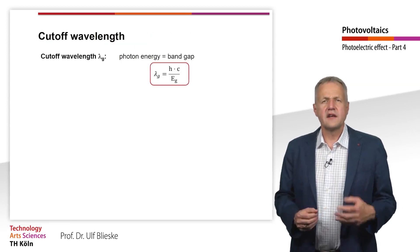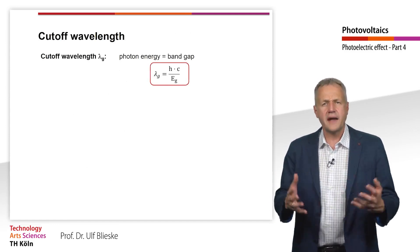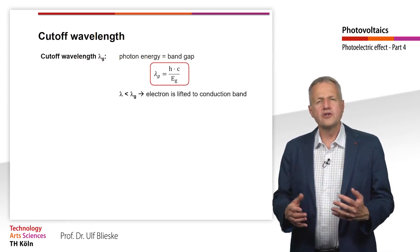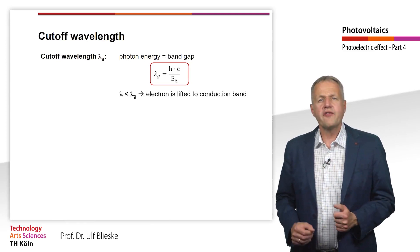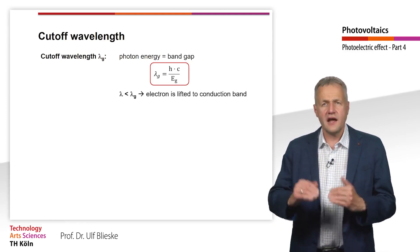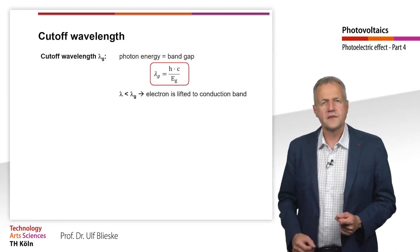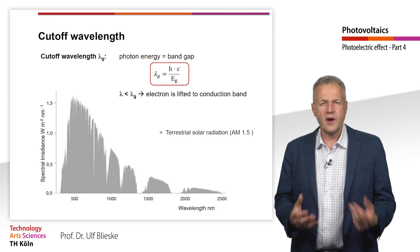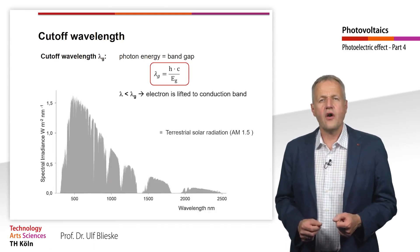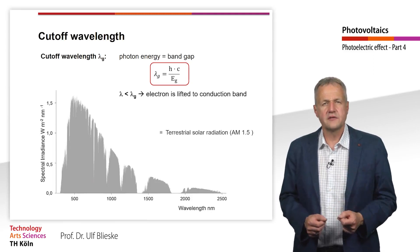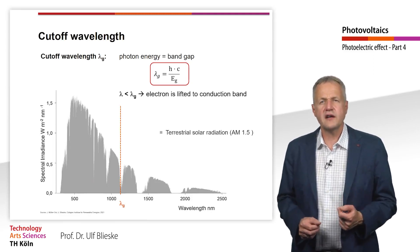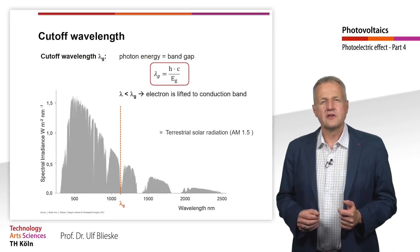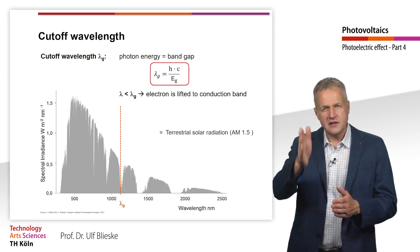The wavelength at which the photon has exactly the energy of the band gap E_g is called the cut-off wavelength. Only photons with a smaller wavelength than the cut-off wavelength can lift an electron from the valence to the conduction band. The figure shows the power density of the solar spectrum in watts per square meter per micrometer as a function of wavelength in nanometers. Lambda_g, the cut-off wavelength of crystalline silicon, is 1120 nm, and has been entered into the graph.